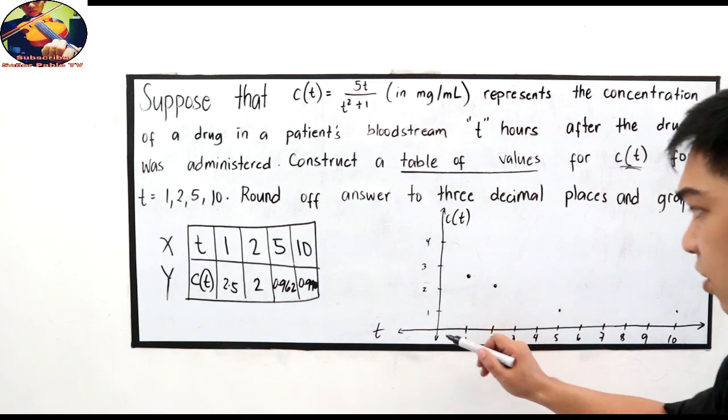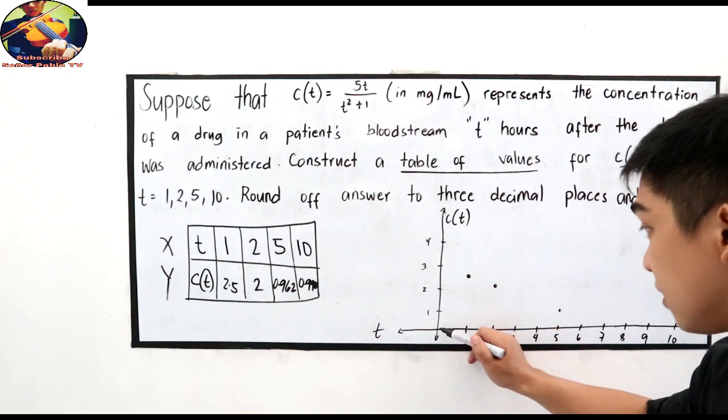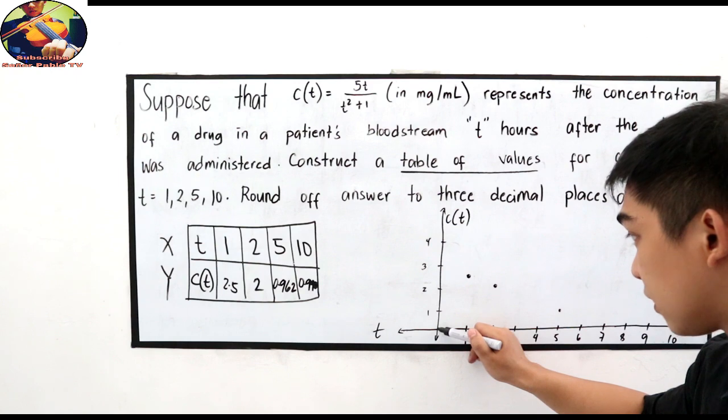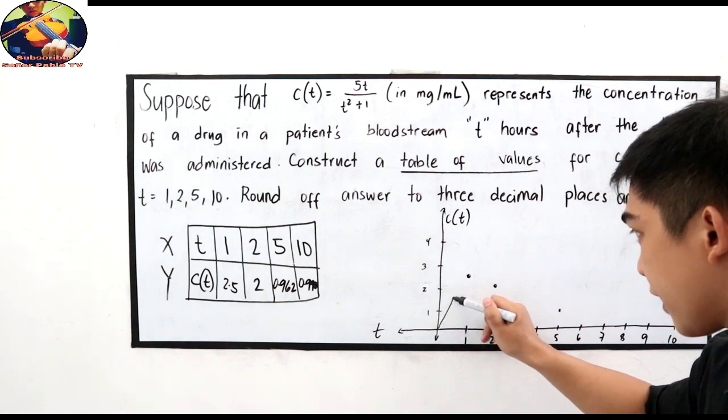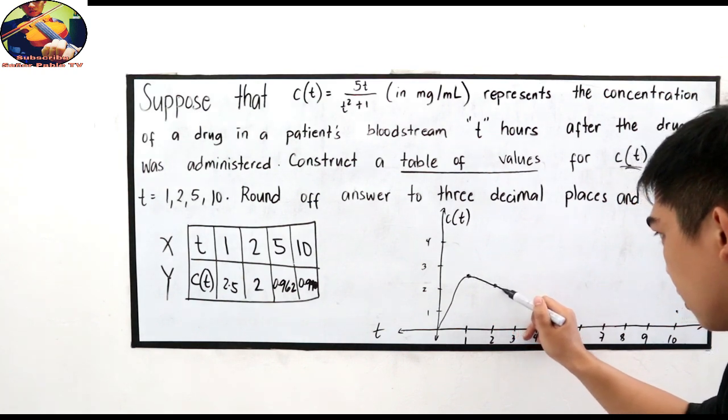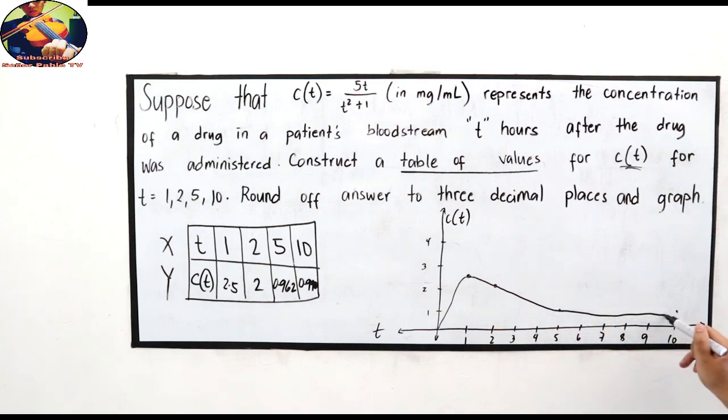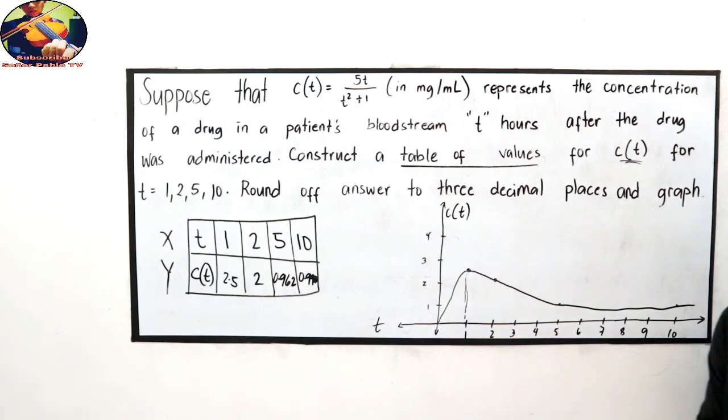Then, let's connect them. So, we start at zero, because when they haven't taken it, or at zero hour, they haven't had time to take it. Going to our first point, and then to the second point, then to the third point, and going to the last point. So, there's the graph of our rational function for this given problem. I'm kind of doubtful about this value here. So, it should go down more here.